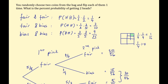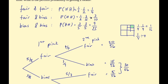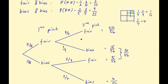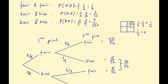Now combining with our two-heads probabilities: the probability of picking two fair coins and flipping two heads is twenty out of fifty-six multiplied by one-quarter. For a fair and biased coin, it's thirty out of fifty-six multiplied by three out of ten. For two biased coins, it's six out of fifty-six multiplied by nine out of twenty-five. We then add all of these together — because we're summing over mutually exclusive scenarios.